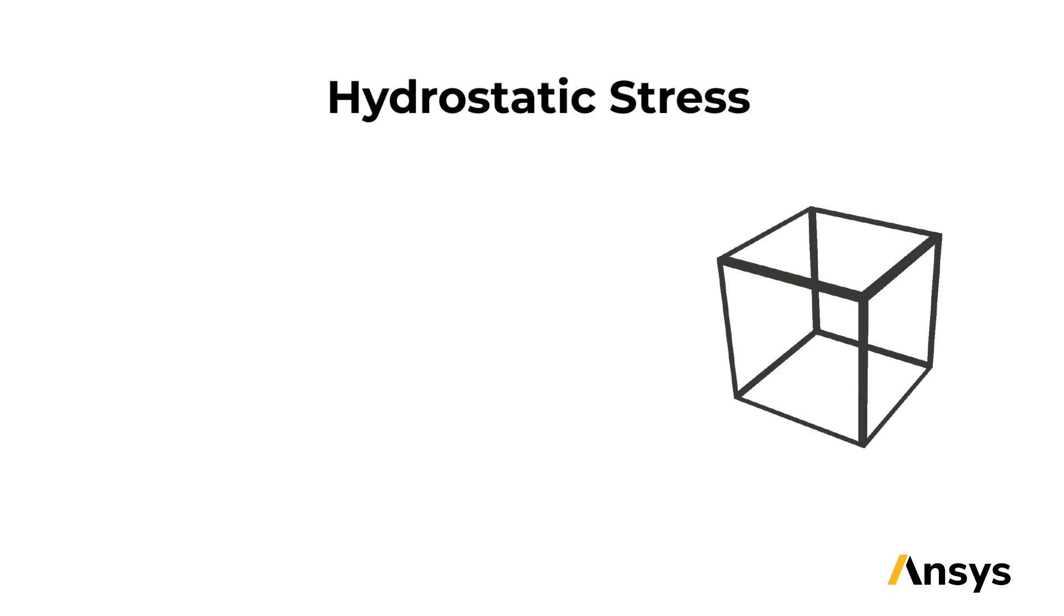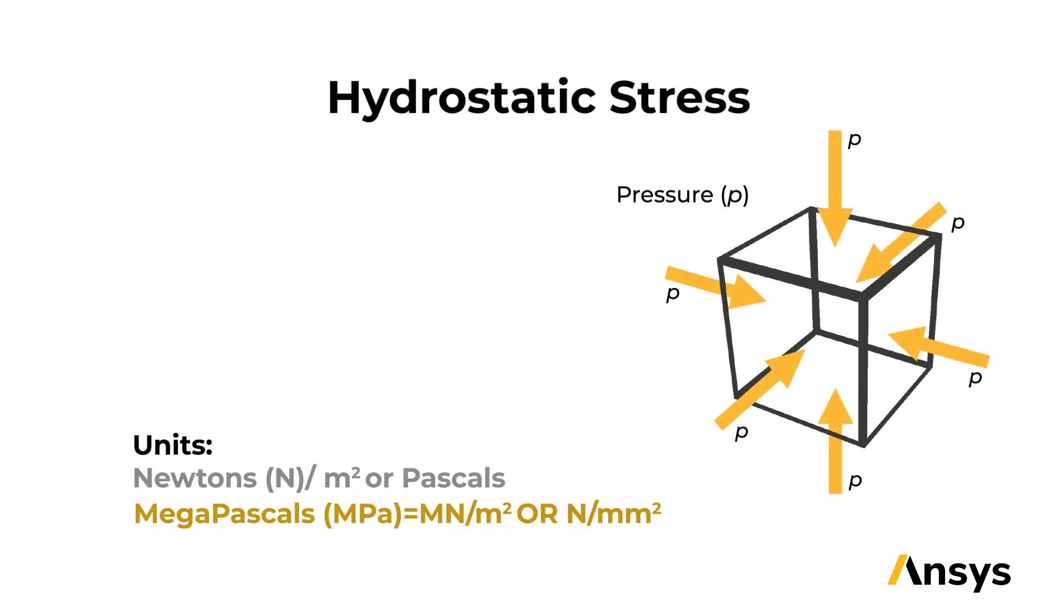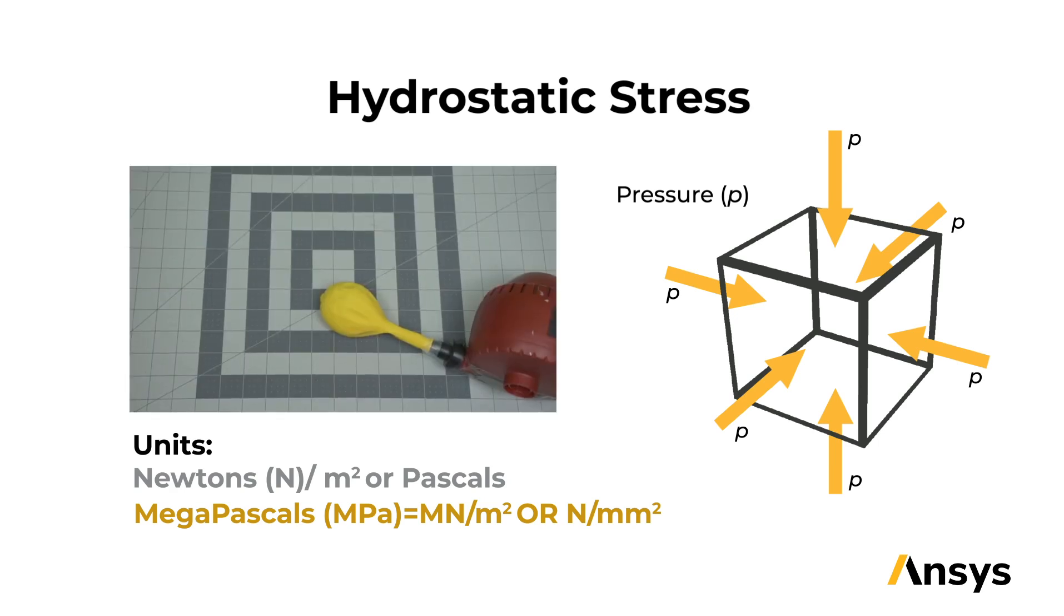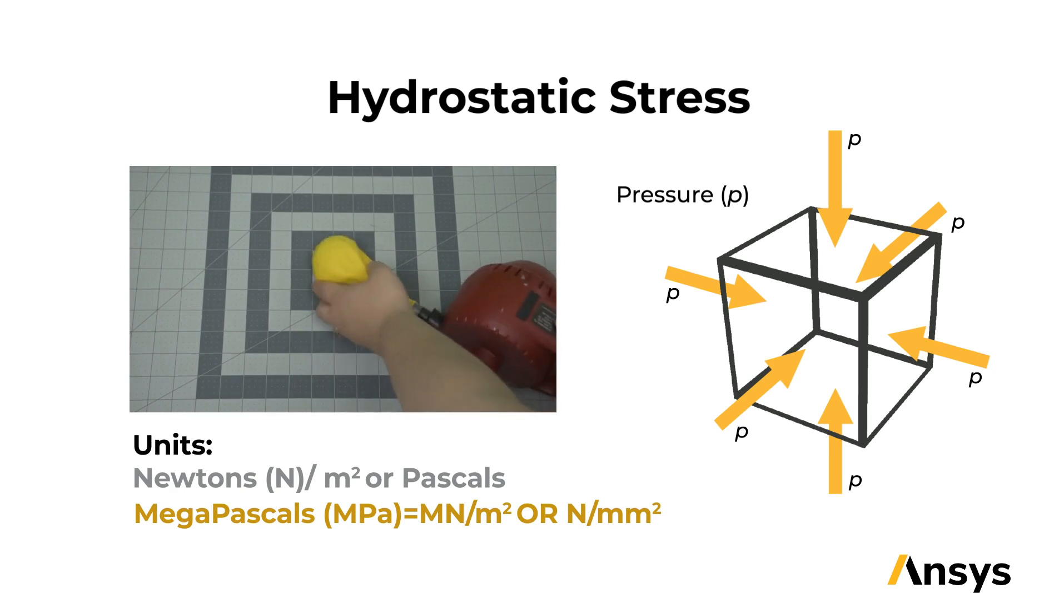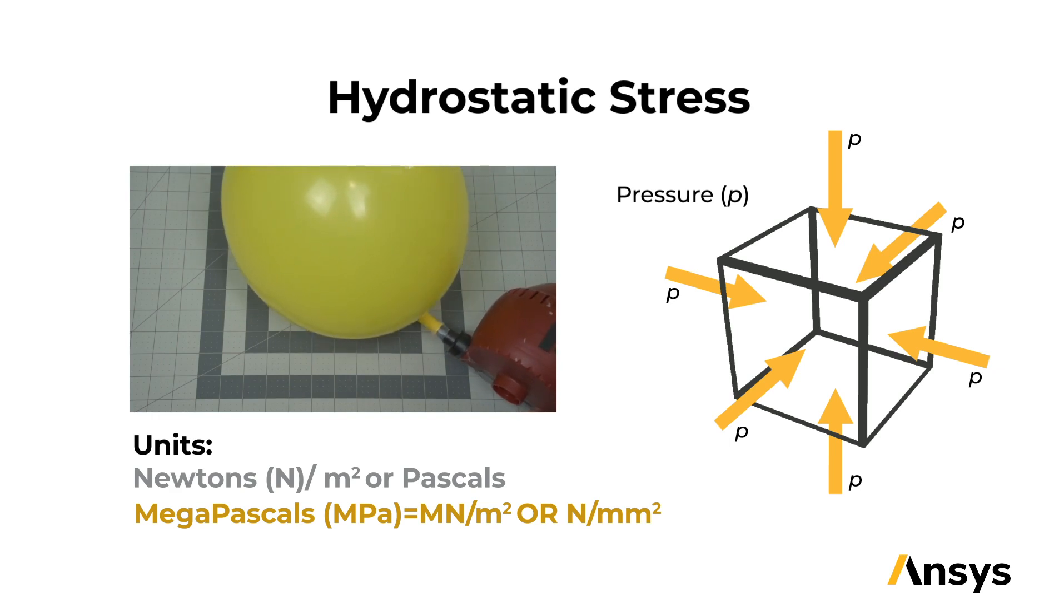Our final stress state we will discuss is hydrostatic stress, which occurs when an equal stress, either tensile or compressive, is applied to all surfaces of a solid. An example of this is our pressure vessel we saw earlier, or blowing up a balloon. As I apply some pressure to the entire surface of my balloon as I'm blowing it up, in this case with an electric pump, we can see the entire balloon expanding. Something to pay attention to with pressure is the sign. Pressure is positive when we are pushing on the surface of our material.